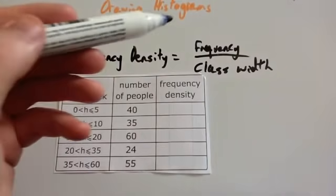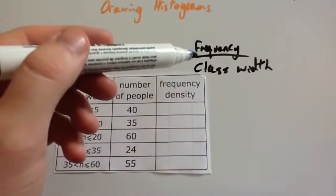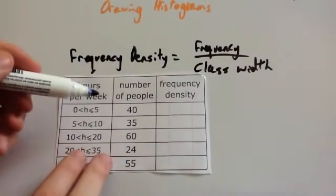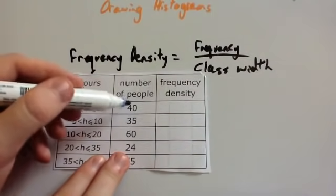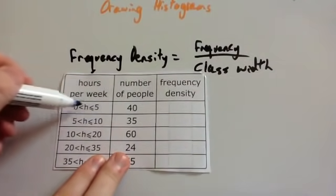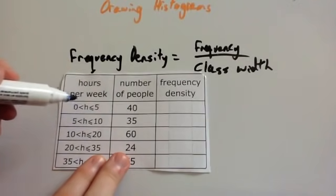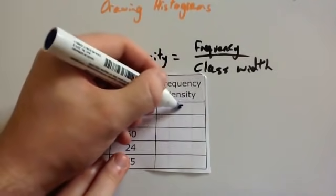So let's then work out our frequency densities. Remember, frequency density is frequency divided by class width. So we're going to divide the frequency by the class width. So the frequency of this category is 40. The class width is 5. So we're going to do 40 divided by 5. 40 divided by 5 is 8.